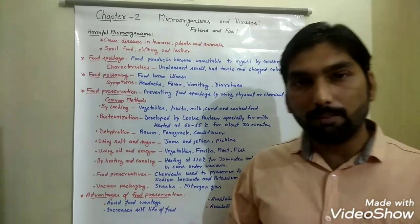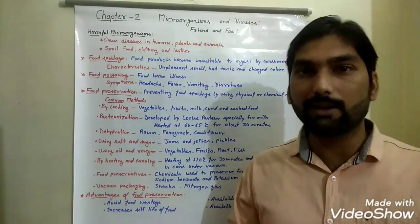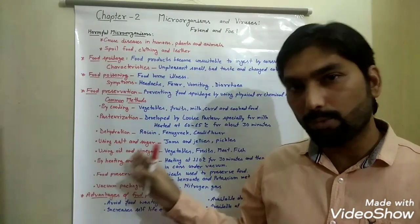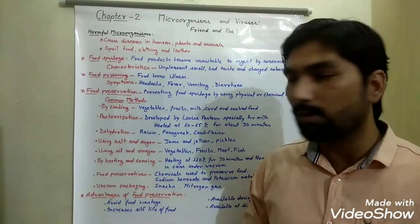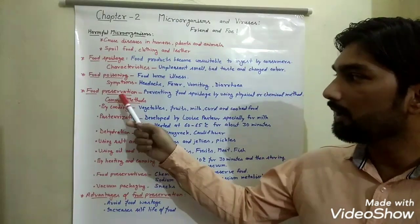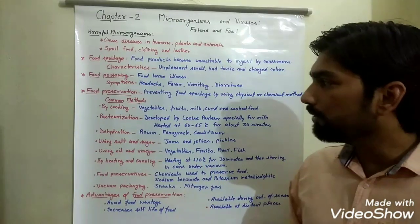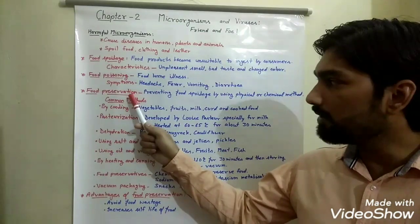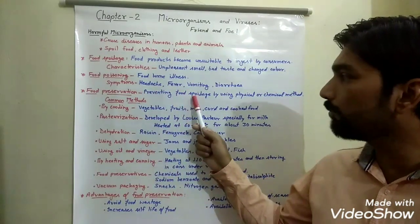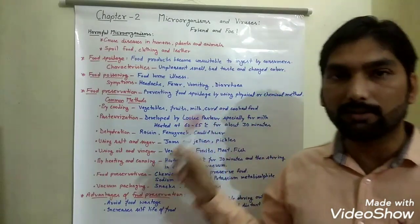We must protect our food from getting spoiled, and we have many methods to do so. Food preservation is a method of preventing food spoilage by using physical or chemical methods. We will now see what physical and chemical methods are used to avoid food spoilage.